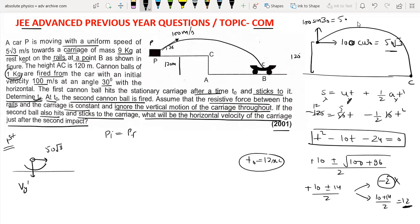The cannonball's mass is 1, so 1 into 50√3. The carriage mass is 9, but it has been stopped initially. After collision, total mass is 10. So 10v1. v1 is equal to 5√3. This is the first collision.